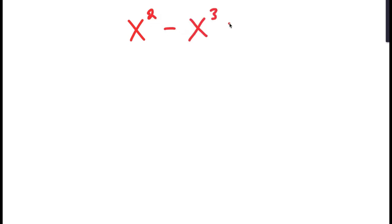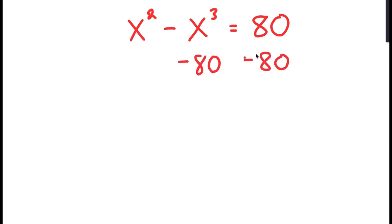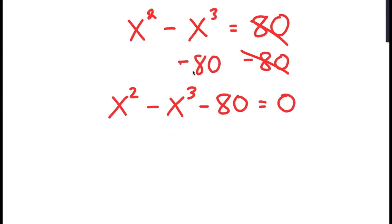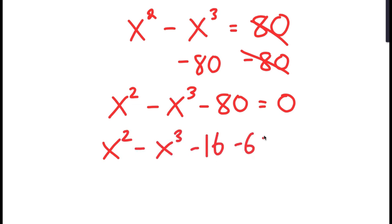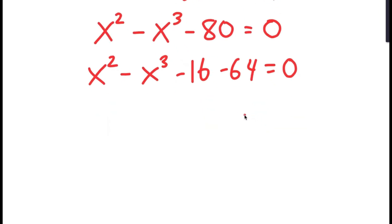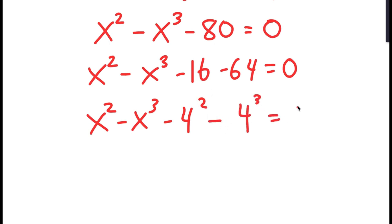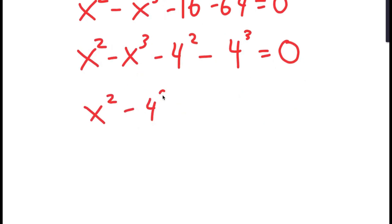Now I'm going to solve the equation x squared minus x cubed equals 80. To solve this, I'll first subtract 80 from both sides, giving x squared minus x cubed minus 80 equals 0. I'll replace negative 80 with negative 16 minus 64, then rewrite negative 16 as negative 4 squared and negative 64 as negative 4 to the power of 3. I'll group x squared with negative 4 squared, and x cubed with negative 4 cubed.